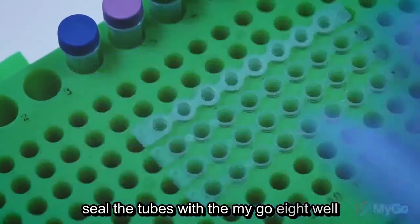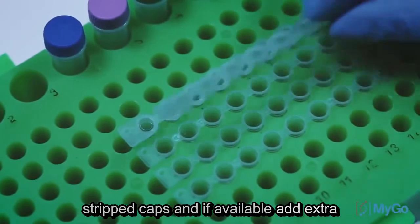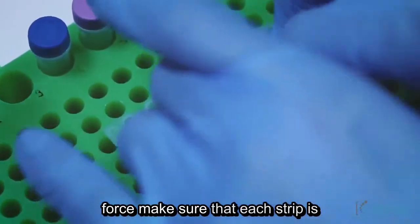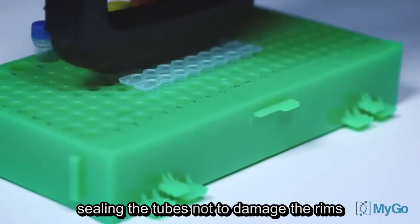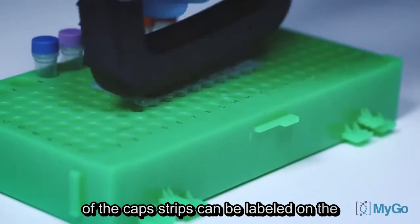Seal the tubes with the MYGO 8-well strip caps, and if available, add extra force. Make sure that each strip is sealed securely, and take care when sealing the tubes, not to damage the rims of the caps.